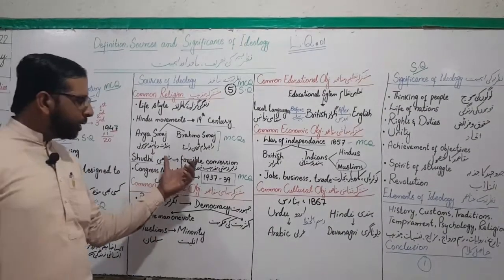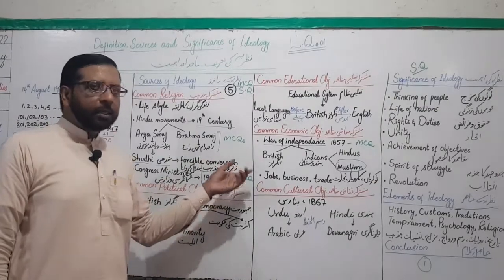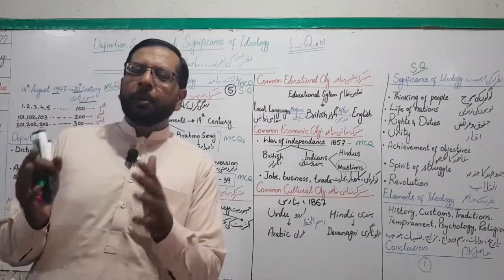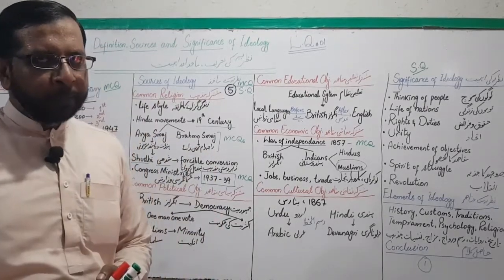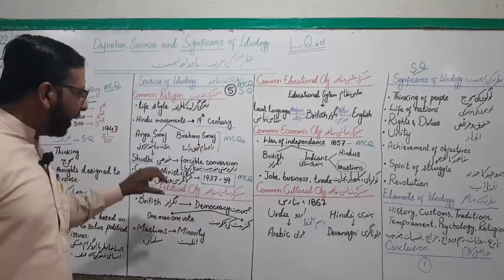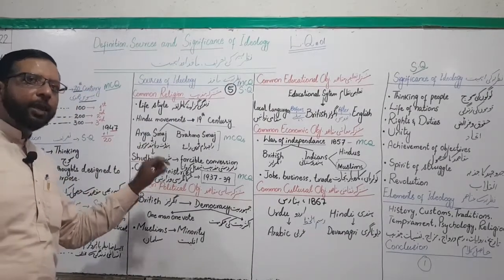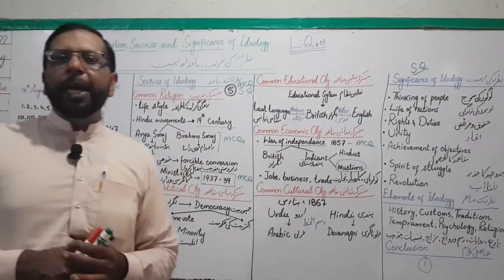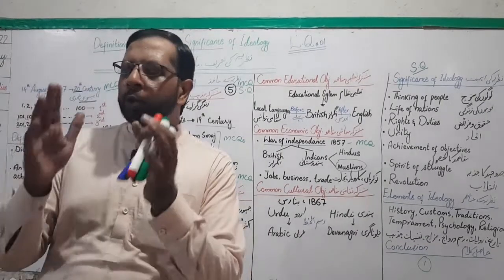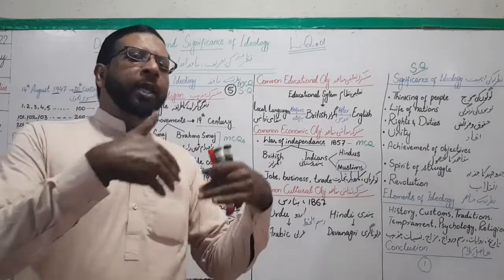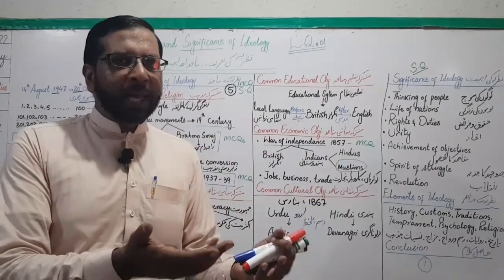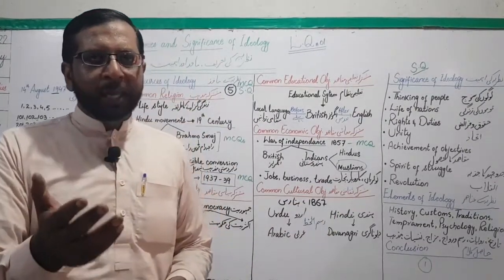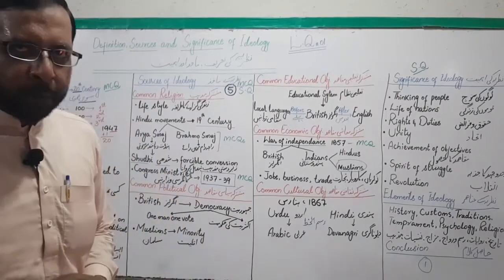That program was the forcible conversion — zabardasti mazhab tabdeel karana. Muslims ko force kiya jata tha ke woh apne mazhab ko chhorh kar Hindu mazhab qabool kar lein. Shudhi Hindi zuban ka lafz hai jiska matlab hai 'to purify' — paak karna. Hinduwon ka concept yeh tha ke jo Hindu hai woh paak hai aur jo Hindu nahi woh napak hai — agar woh Hindu mazhab qabool kar le toh napak se paak ho jata hai. This was the main program.